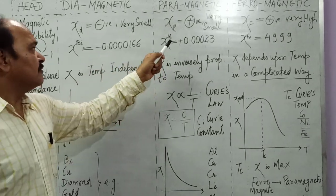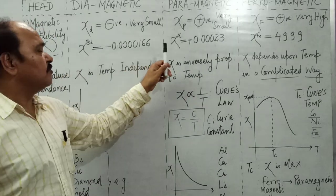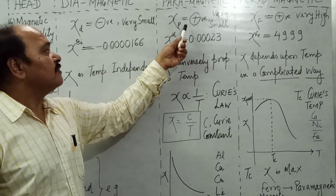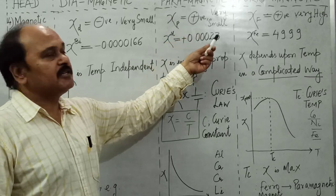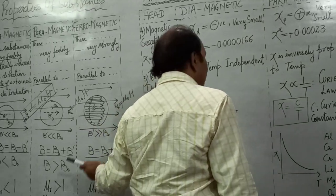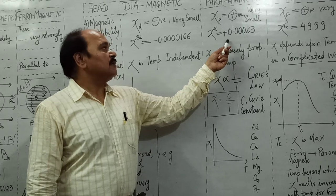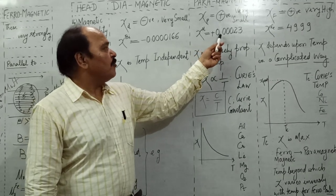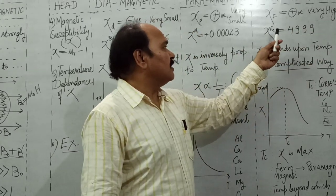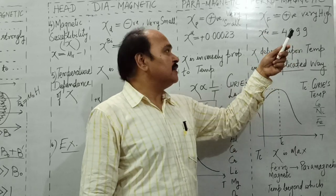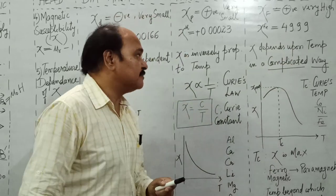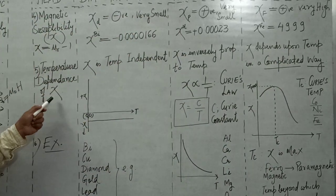For paramagnetic substances, χ = μr − 1 is positive and very small. For Aluminium, χ = 0.00023. For ferromagnetic substances, χ is positive and very large. For Iron with μr = 5000, χ = 4999 — very very high.